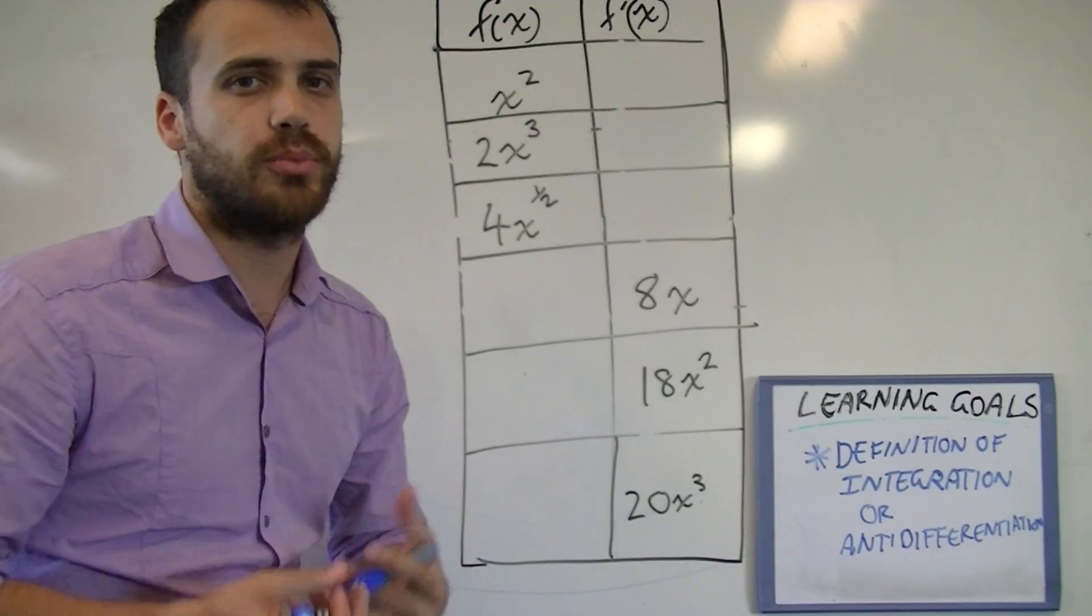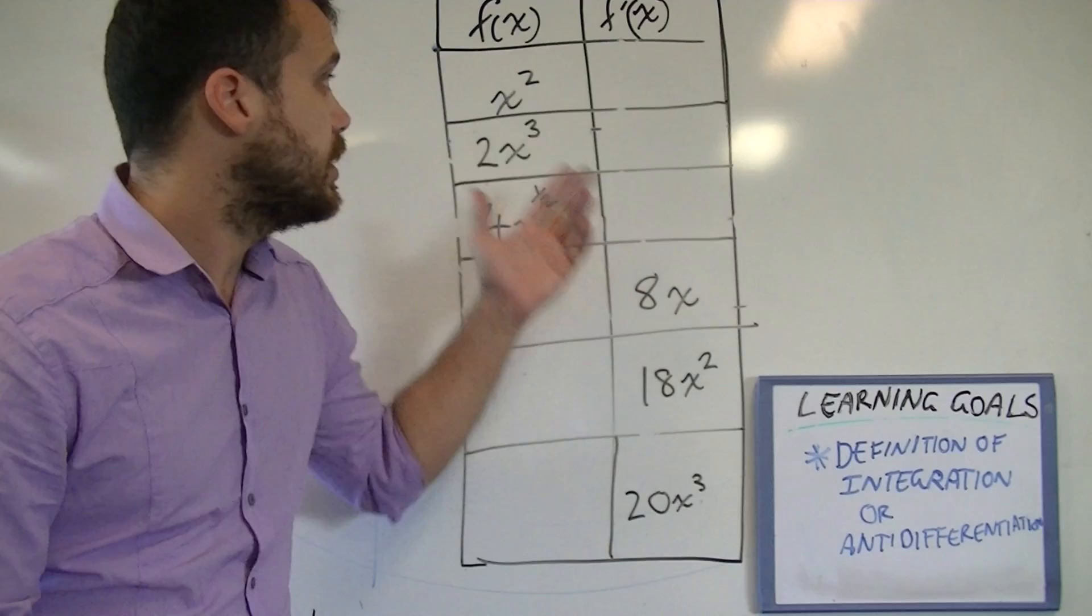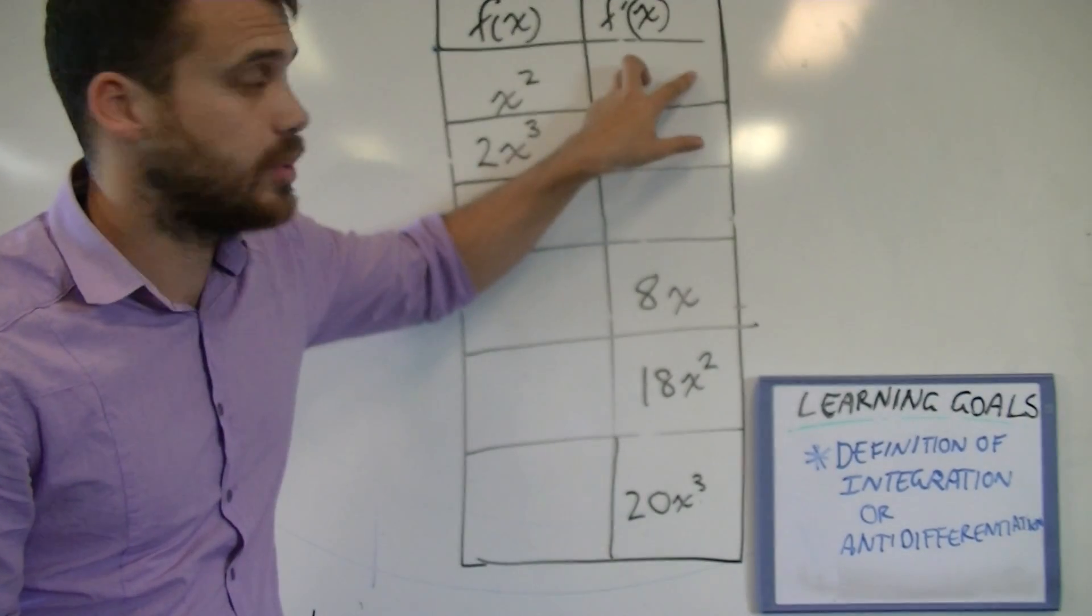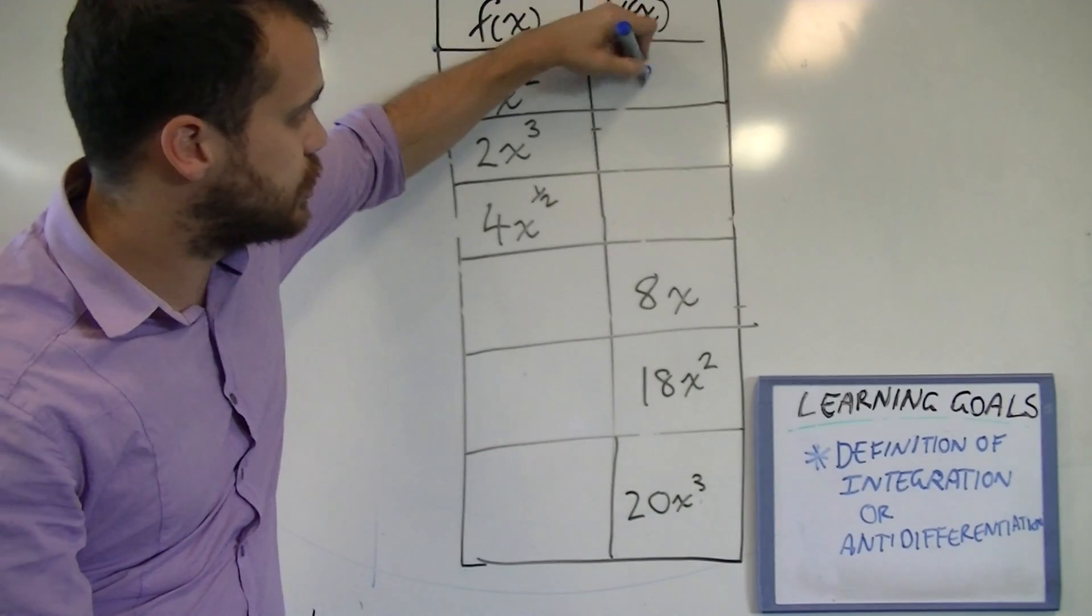Now the derivative, you guys got pretty good at figuring out the derivative. Let's look at this one, x squared. The derivative of x squared is 2x.